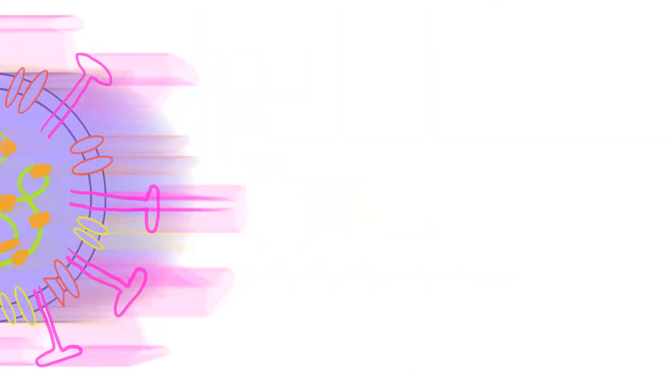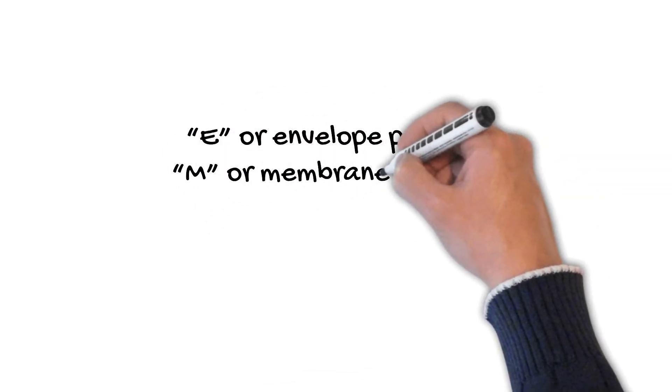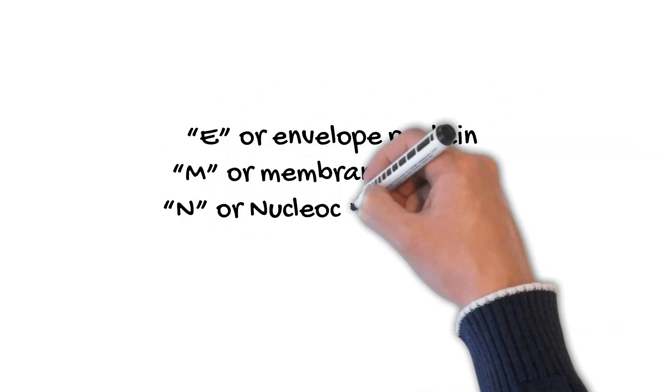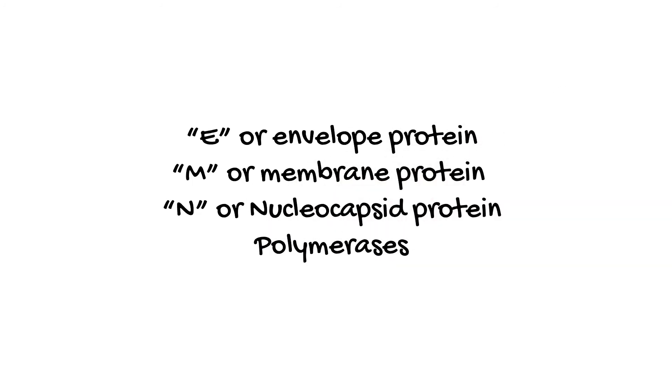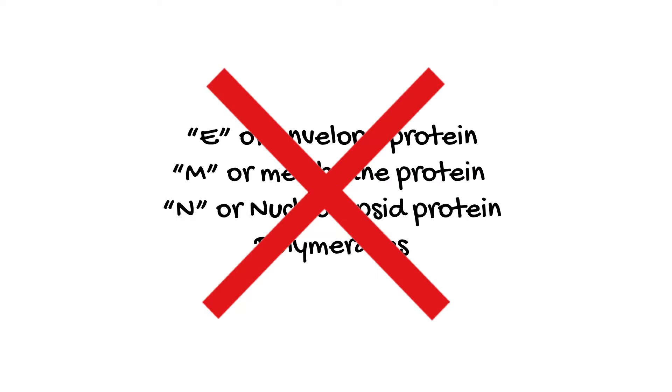The E protein will be missing, the M protein will be missing, the N protein will be missing, the polymerases that are created by the virus. None of that will be there. In other words, no virus, just the spike protein.